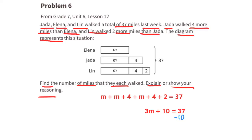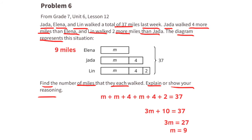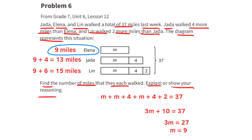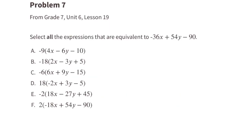Collecting like terms gives 3m plus 10 equals 37. Subtract 10 from both sides: 3m equals 27. Divide both sides by 3: m equals 9. So Elena walked 9 miles, Jada walked m plus 4, which is 13 miles, and Lynn walked m plus 4 plus 2, which is 15 miles.